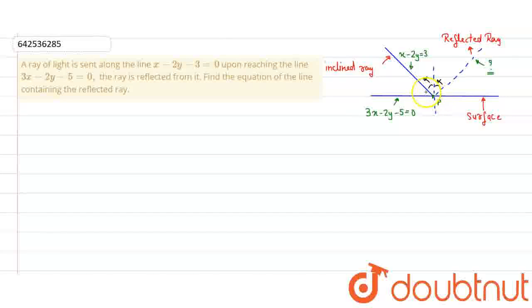And after intersection, it will go toward outwards. And we have to find the equation of the reflected ray. How we will find the equation of the reflected ray?